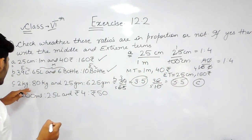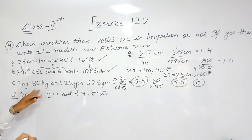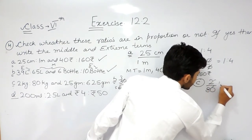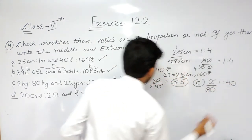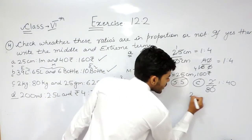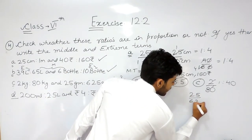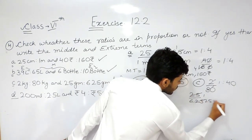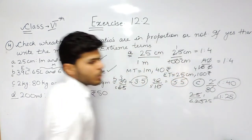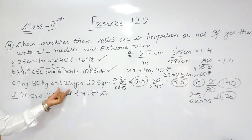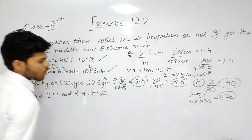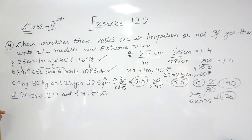Now coming on to part C. It says 2 kg ratio 80 kg. The ratio will be 2 upon 80, that is 1 ratio 40. And here it is 25 grams ratio 625 grams, giving the ratio 25 upon 625, that is 1 ratio 25. These two ratios are not equal to each other, meaning this statement is not in proportion.